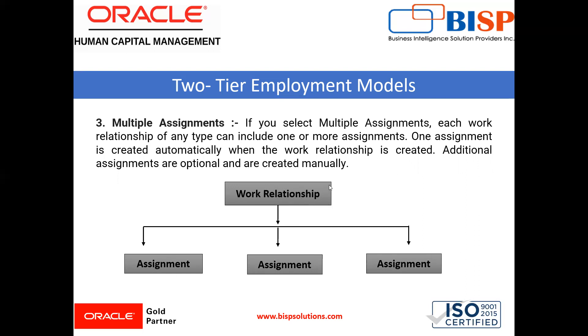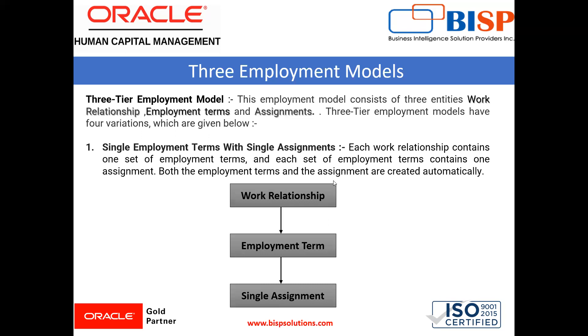Next is the three-tier employment model. This employment model consists of three entities: work relationship, employment term, and assignment. The three-tier employment model has four variations.